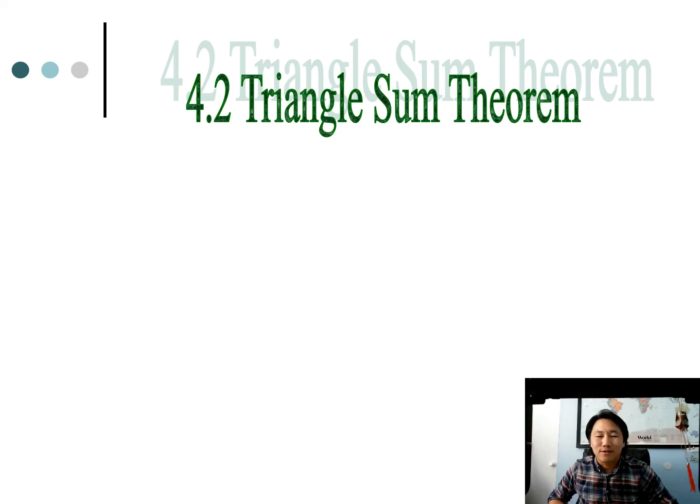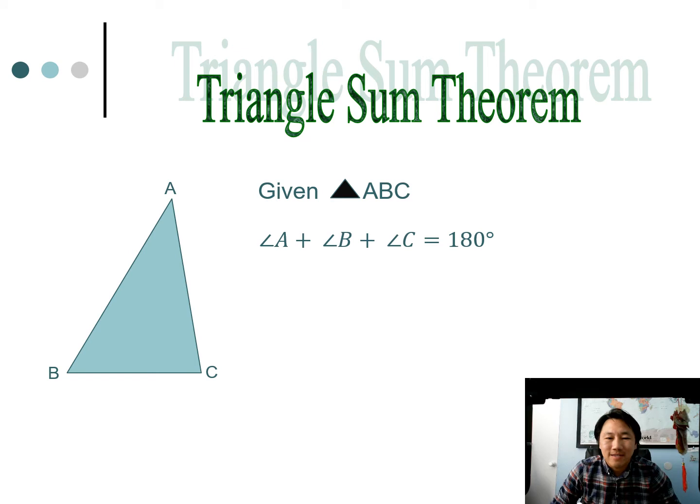And if I'm being honest, this should have been a nightmare. 4.2 Triangle Sum Theorem - let's see what that theorem says. All right, so given any triangle ABC, in this case if you take angle A and you add it to angle B and you add it to angle C, you should get 180 degrees.